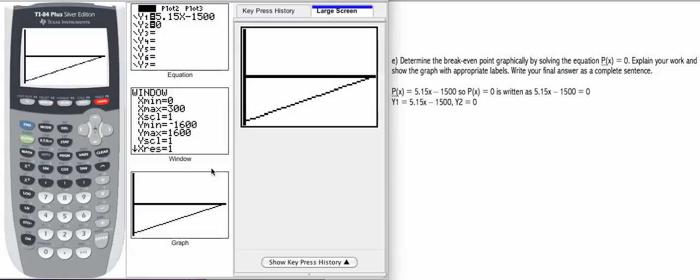We can see from our graph that our profit function, when our input is zero, so no deliveries, we have a negative value for profit, which we said before makes sense. My profit function is going to increase in a linear way. In fact, the slope of this function is 5.15. It's a linear function. And then my break-even point is going to be right here where the profit function crosses the x-axis.